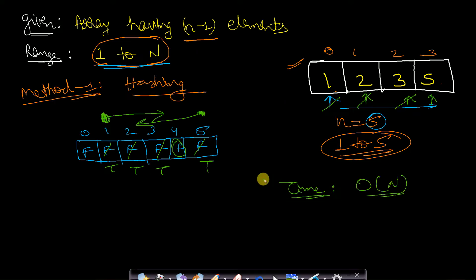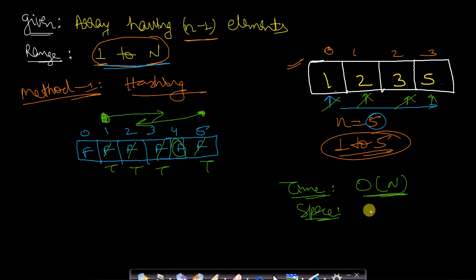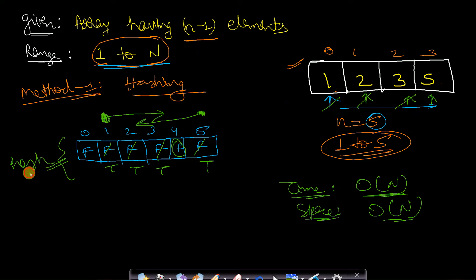The time complexity of this hashing approach is O(n), since we loop through all n-1 elements to assign values to the hashmap. The space complexity is also O(n) because we are using extra space for the hashmap.